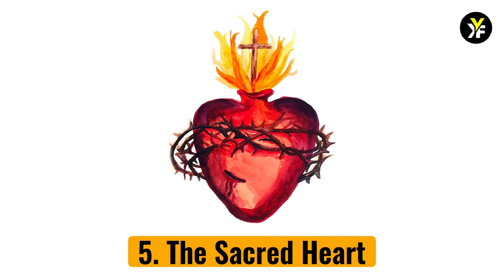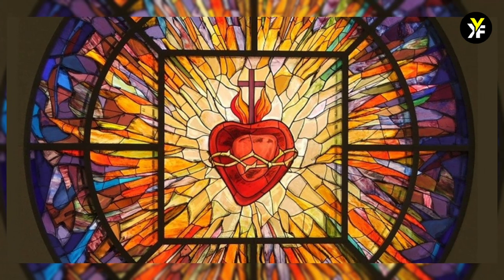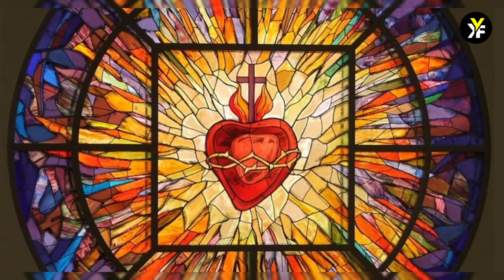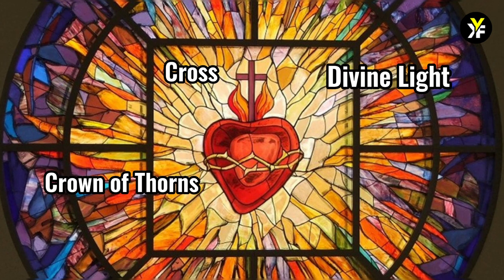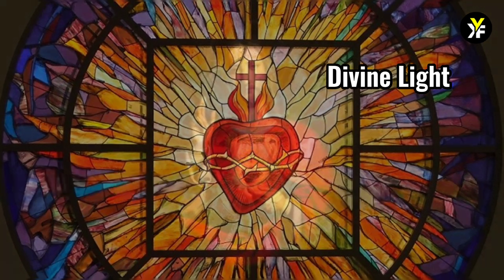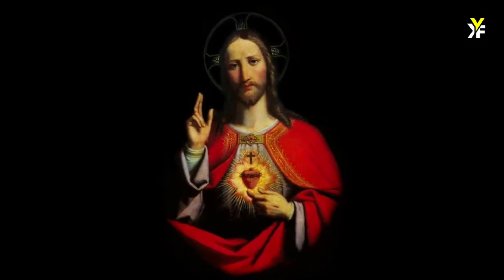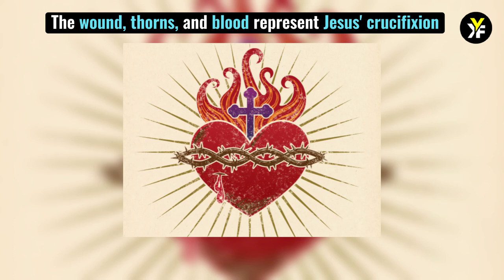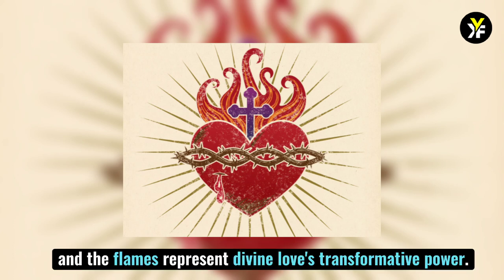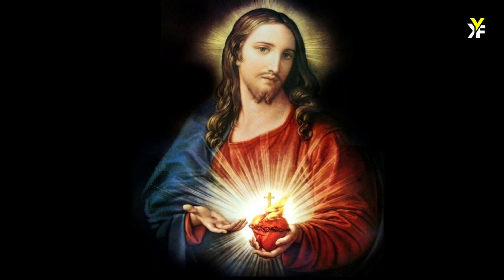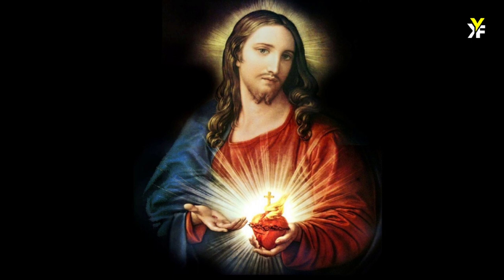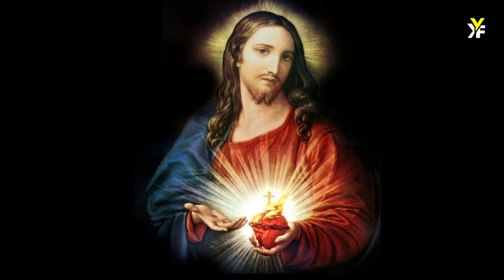Number 5: The Sacred Heart. The sacred heart is usually depicted as a flaming heart in Catholic art. It is usually illuminated by divine light, surrounded by a crown of thorns, topped by a cross, and bleeding. It is sometimes depicted in the bosom of Jesus Christ. The wound, thorns, and blood represent Jesus' crucifixion, and the flames represent divine love's transformative power. The sacred heart represents both Jesus' physical heart and divine love. It is devotional for Catholics everywhere, encapsulating Jesus' long-suffering, love, and passion for humanity.